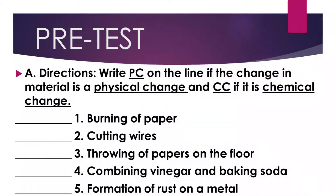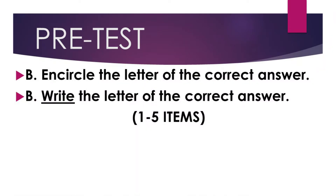In your module, you can now answer the pretest on page 2. There are two directions. Letter A is write PC on the line if the change in material is a physical change, and CC if it is a chemical change. For letter B, you're going to write the correct letter of your answer.